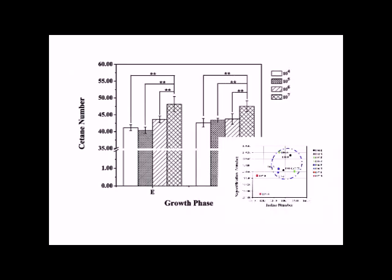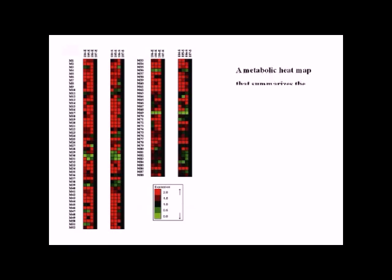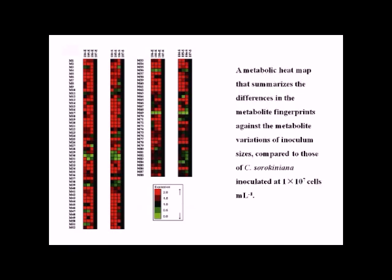the productivity and the saturation number of FAME increased with increasing initial cell density. A metabolic heatmap analysis was employed to provide an overview of the metabolite profiles.